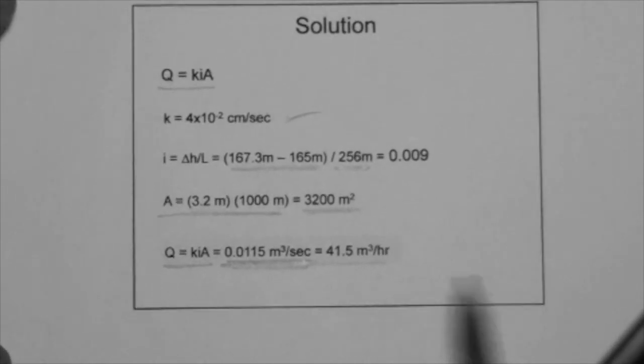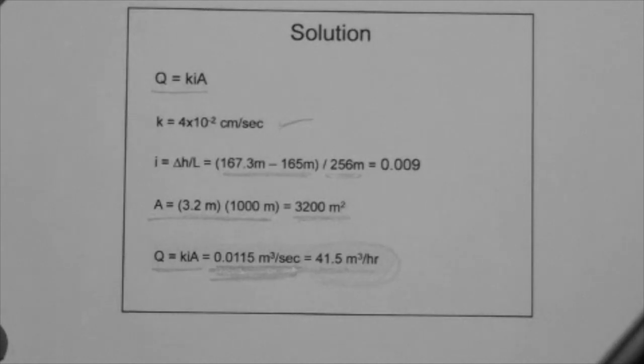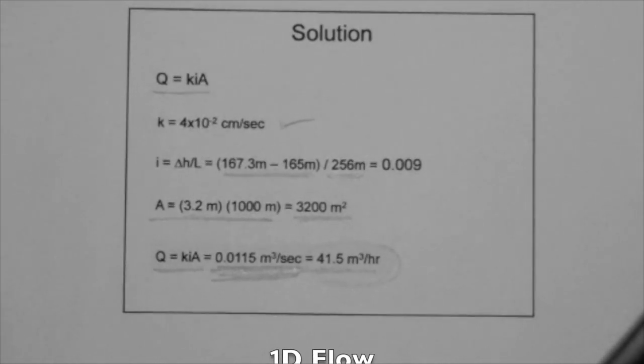Now, here, I have actually calculated the value for meter cubed per hour, just because that way we can get a nicer number than 0.0115. But this answer is perfectly fine. That's one example of a 1D flow in the field, which is actually quite unique.